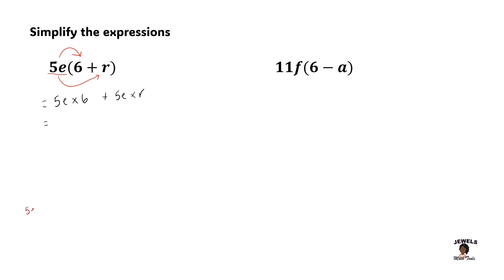I'm going to write that expression out in its expanded form so that you can see how to simplify that term. So we have 5e — that's 5 times e — times 6. Remember that we can multiply the numbers together, so 6 times 5 equals 30, and 30 will be multiplied by e, which equals 30e. Once we have simplified that part of our question, we're going to plug that back in.